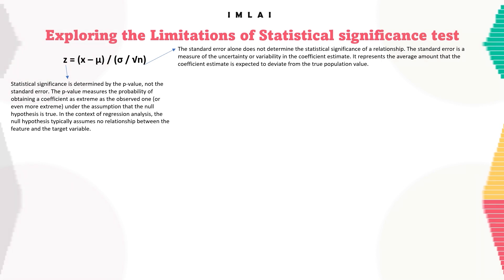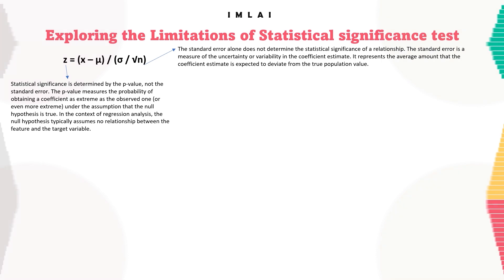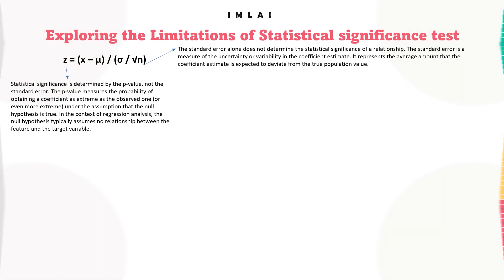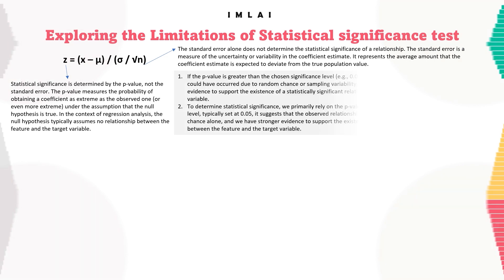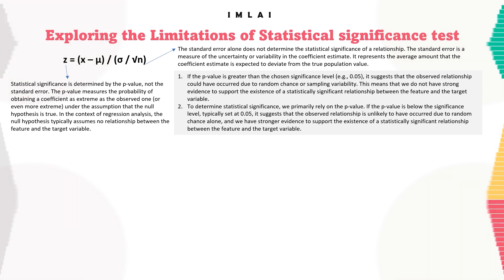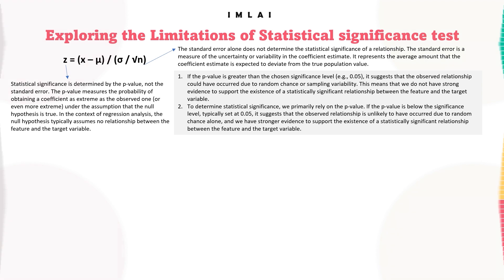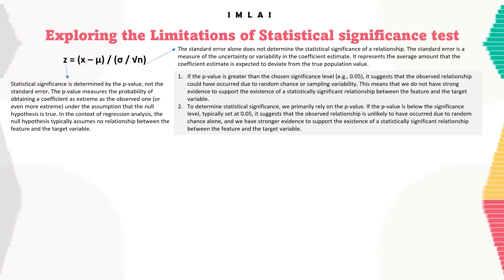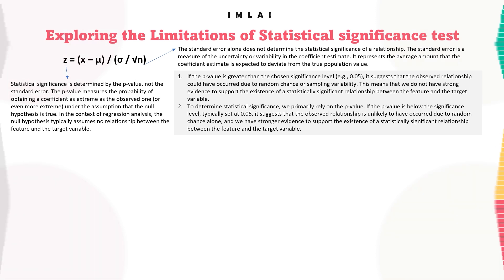Statistical significance is determined by the p-value, not the standard error. The p-value measures the probability of obtaining a coefficient as extreme as the observed one under the assumption that the null hypothesis is true. In regression analysis, the null hypothesis typically assumes no relationship between the feature and the target variable. If the p-value is greater than 0.05, it suggests the observed relationship could have occurred due to random chance, meaning we do not have strong evidence to support a statistically significant relationship.